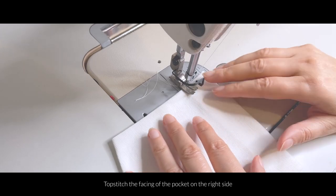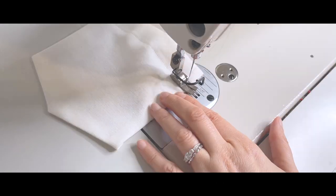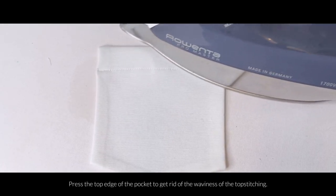Topstitch the facing of the pocket on the right side about 2.5cm from the edge. Press the top edge of the pocket to get rid of the waviness from the topstitch.